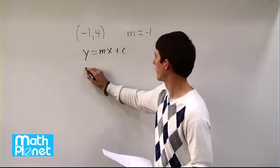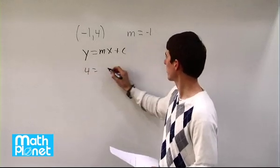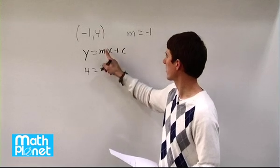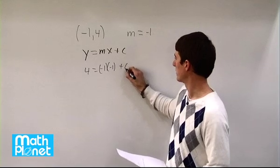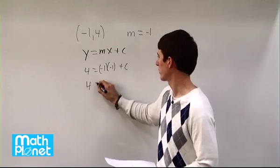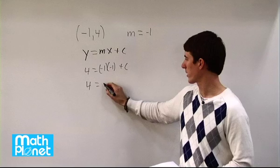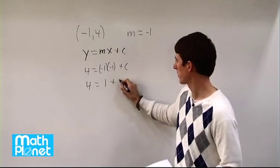So let's plug this in. 4 equals negative 1 times x is negative 1 as well, plus c. So let's go ahead and solve for c. If we have negative 1 times negative 1, that gives us positive 1 plus c.